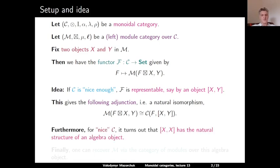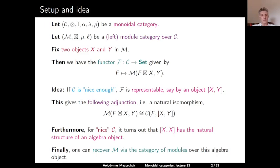Furthermore, for nice C, it turns out that the object [X, X] has a natural structure of an algebra object. And then one will be able to recover the original module category M as the category of modules over this algebra object. So this is the general idea of this lecture.